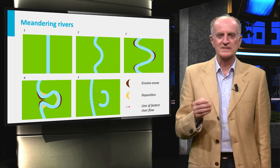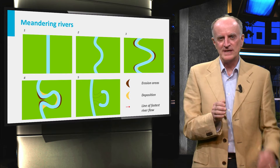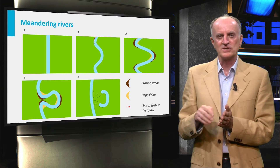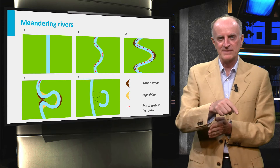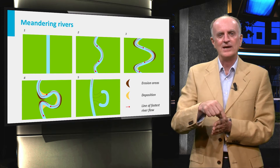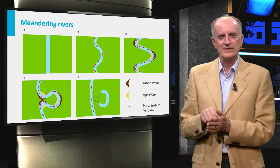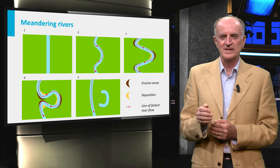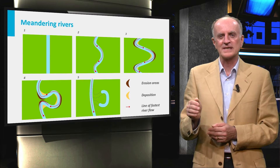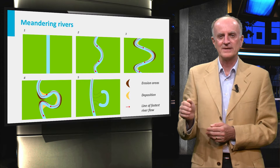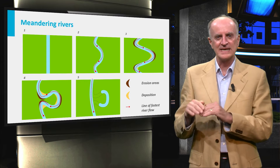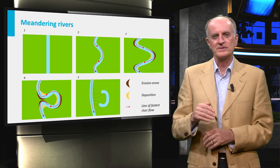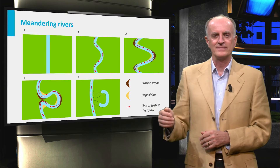The process controlling such migration is the lateral variation in river velocity, which is higher on the external side of the meander and low on the inner side. As a consequence, the river erodes the outer sides of the meander and deposits sands in the inner part, resulting in an outer migration of the meander.